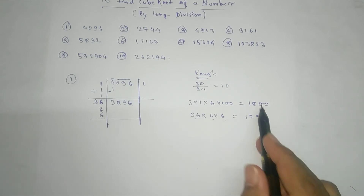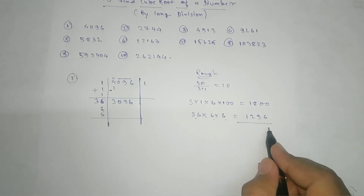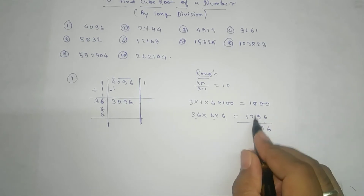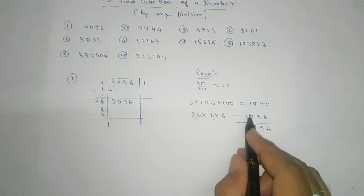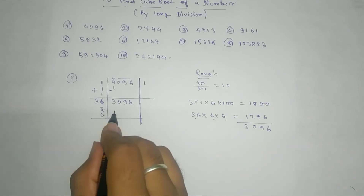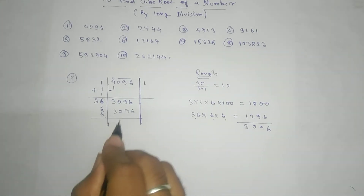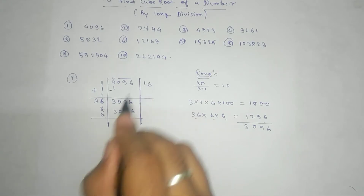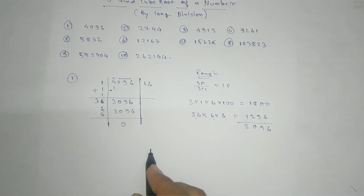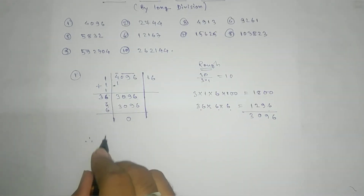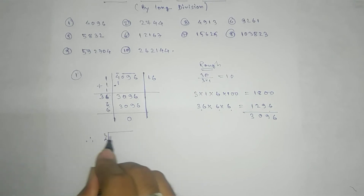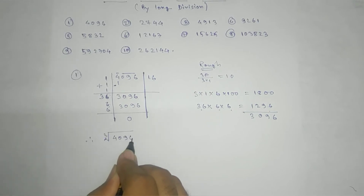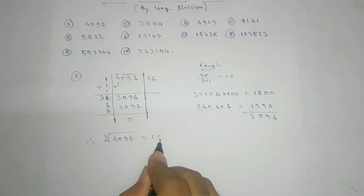Now you add this 2. Check here: 6, 9, 0, 3 — and you can see that 3096. It's the same. So what we have taken is 6 — yes, that is correct. Therefore our answer is: cube root of 4096 is 16.